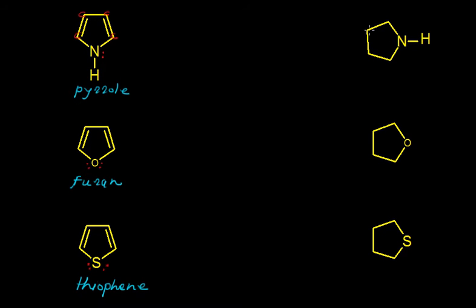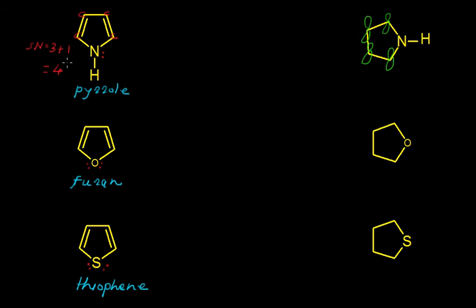We can write the free p orbital on each carbon like this. Now let us check the steric number of this nitrogen, calculated using the same formula from the previous video: total number of sigma bonds on nitrogen is 3, plus the lone pair present on nitrogen is 1. So the steric number is 4, which means this nitrogen appears to be sp3 hybridized — and that is against Hückel's rule for aromaticity.